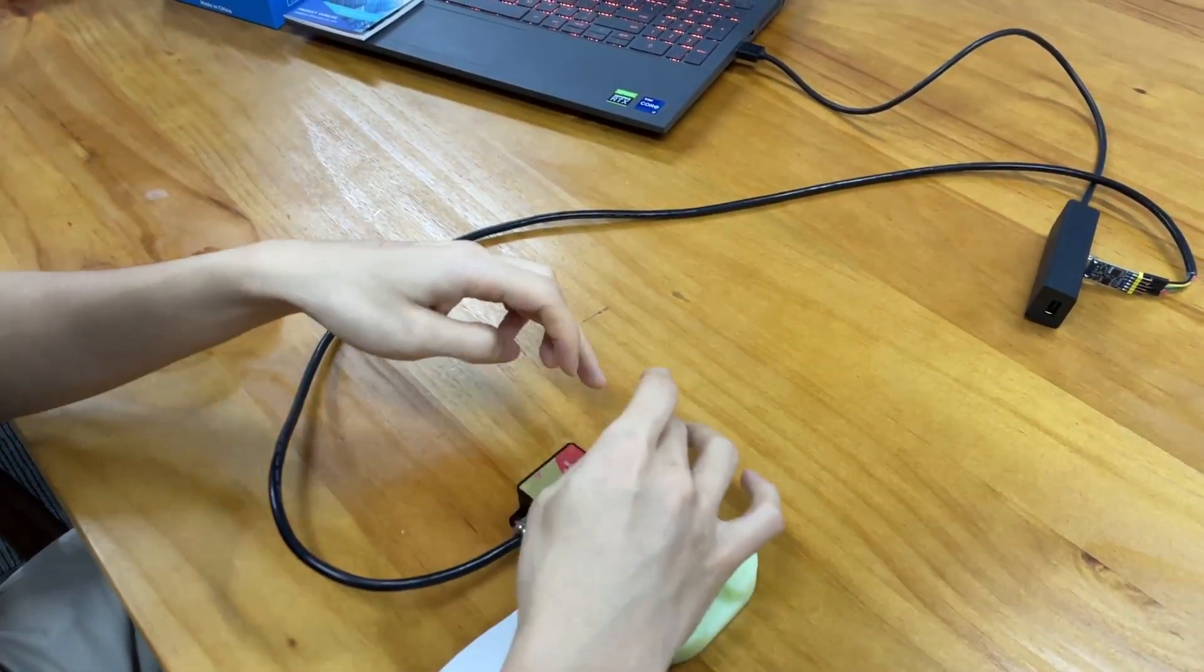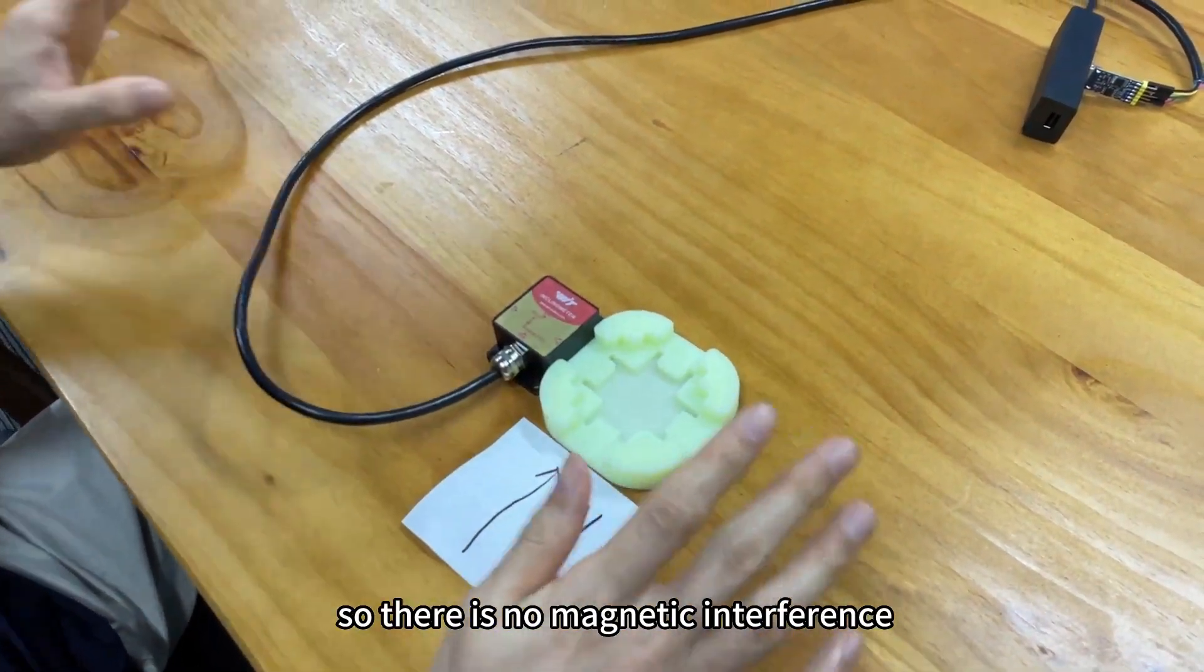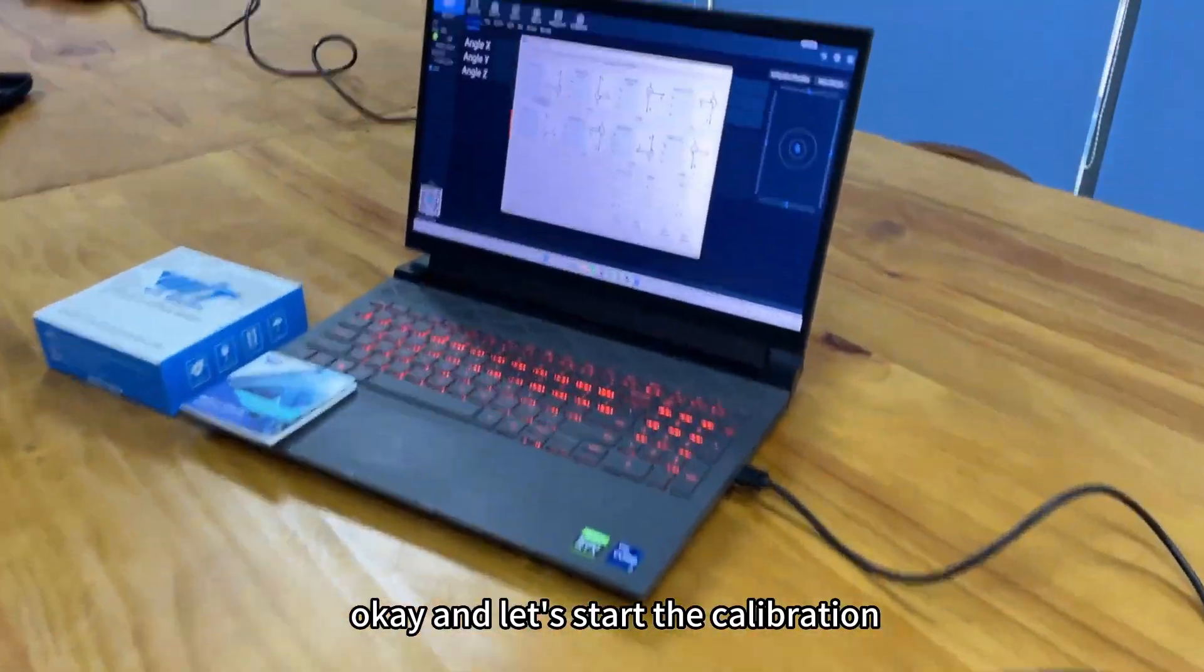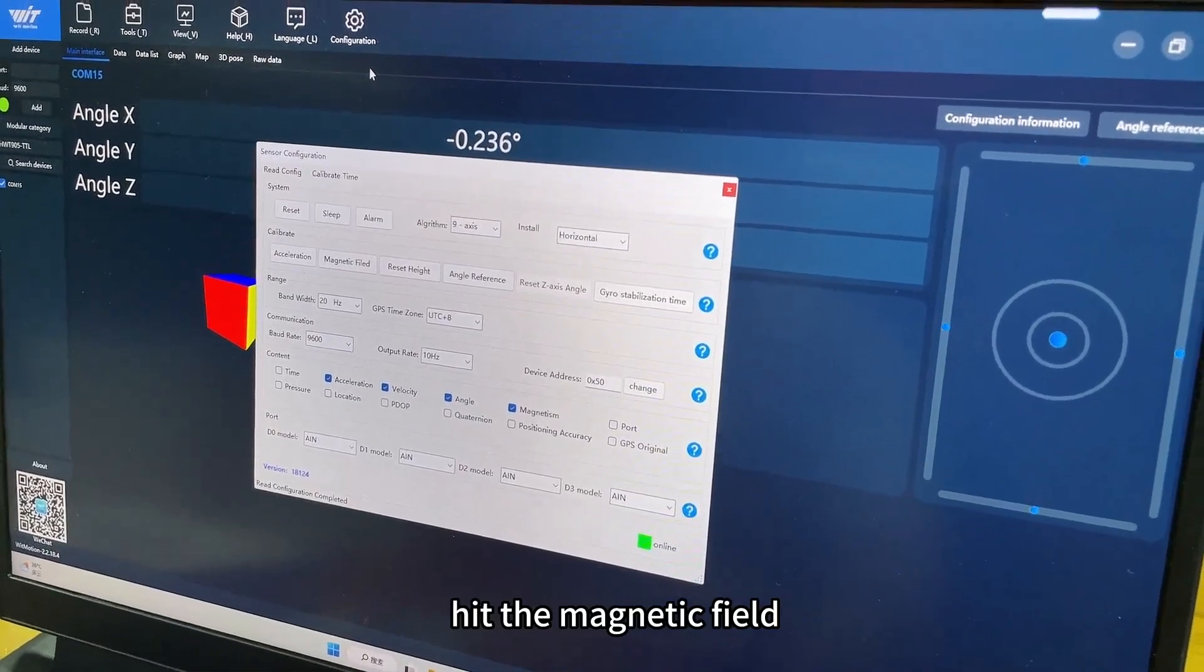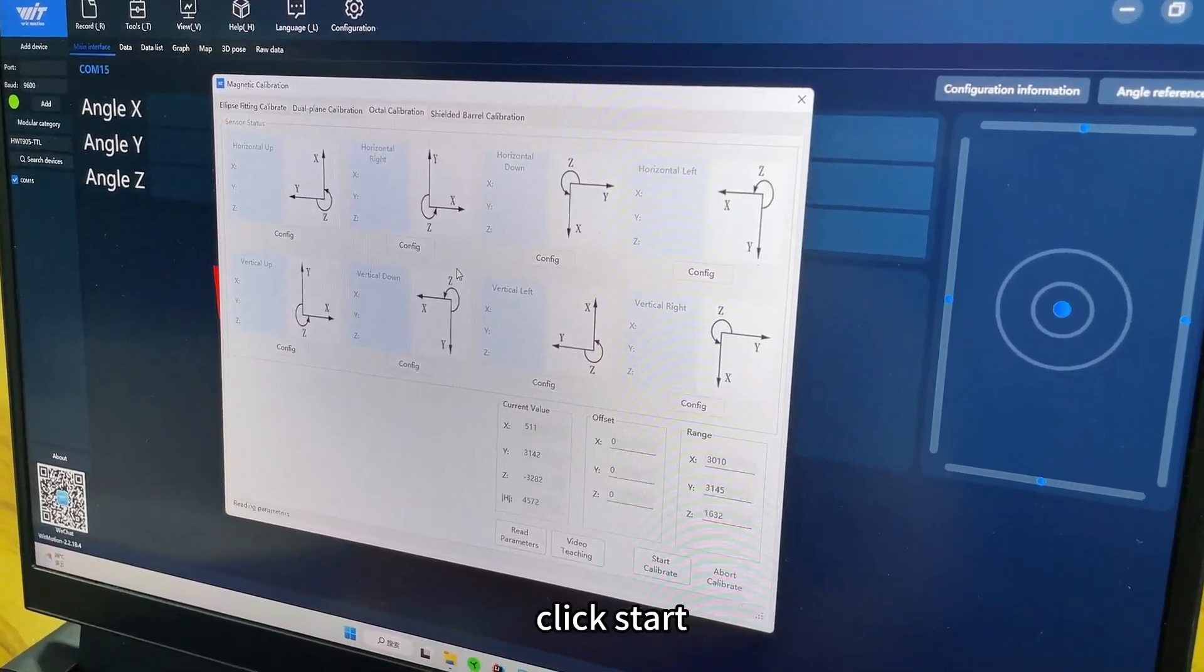This calibration desk is made of wood, so there is no magnetic interference. Let's start the calibration. Hit the magnetic field option and let's go to Octo Calibrate and start.